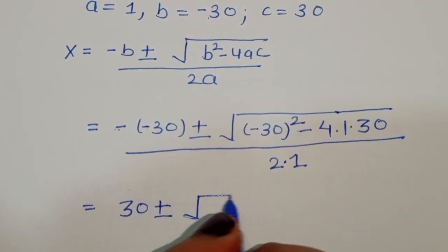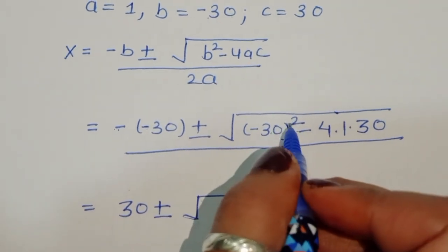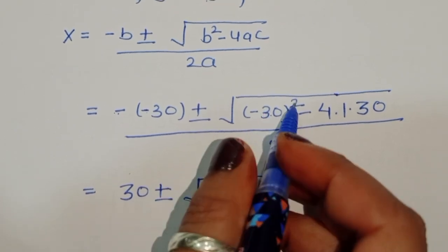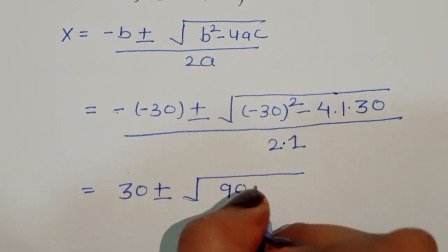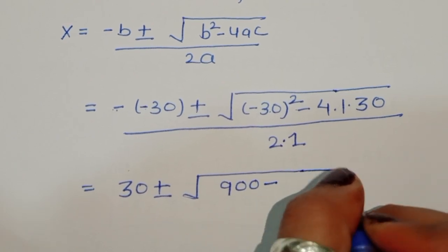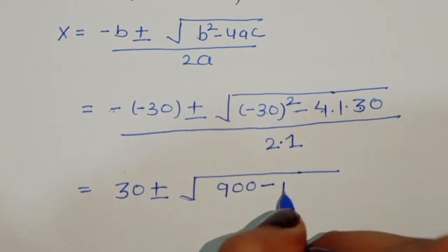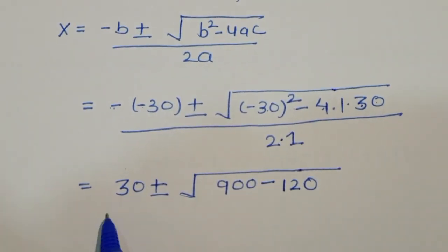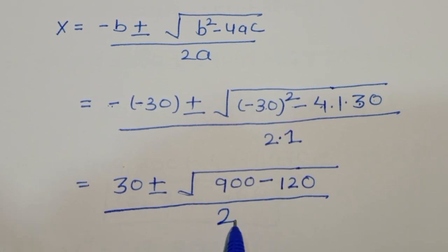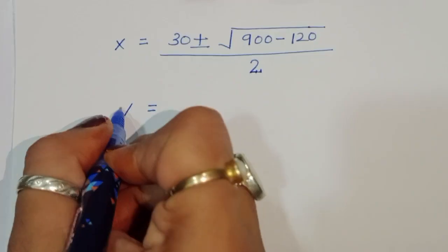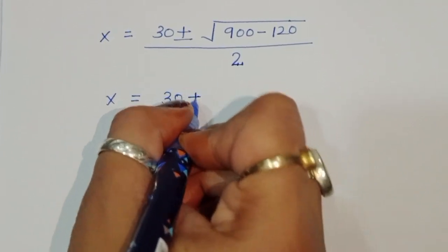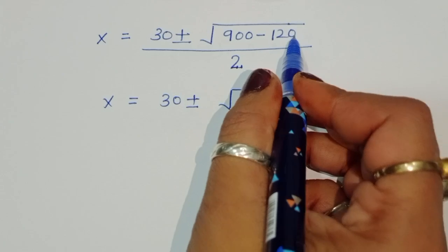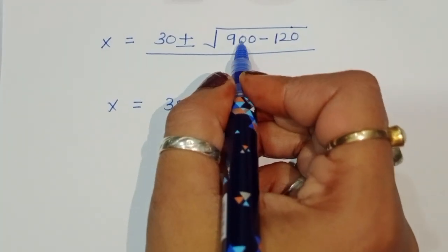Substituting the values, we get x equals 30 plus or minus square root of 30 squared minus 4 times 1 times 30, divided by 2. Now 30 squared is 900, and 4 times 30 is 120, so we get 900 minus 120 equals 780. So x equals 30 plus or minus square root of 780, divided by 2.